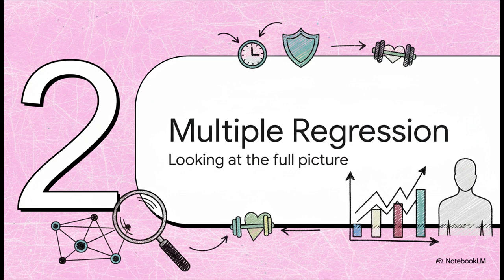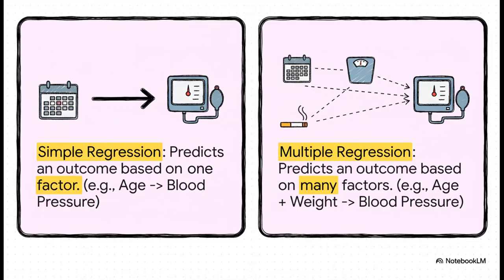Enter multiple regression. This is a huge leap forward because it's designed to look at many different factors all at the same time, helping us get a much more complete picture of what's really going on. With simple regression, you've got a straight line — one factor like age predicting one outcome. But multiple regression is more like a web: it takes a whole bunch of factors — age, weight, whether someone smokes — and weighs them all together to predict that single outcome.